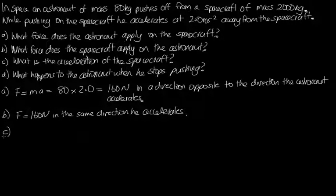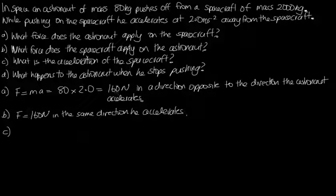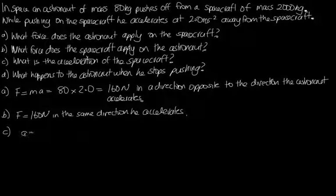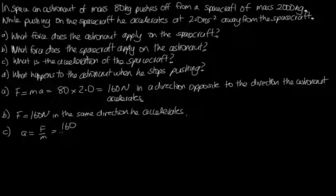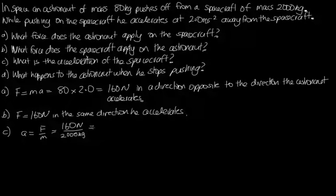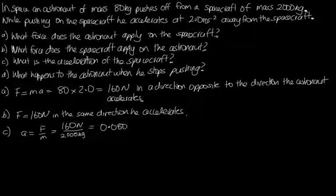Part C: what is the acceleration of the spacecraft? We know the force acting on the spacecraft is 160 newtons. Using Newton's second law, acceleration equals force divided by mass: 160 newtons over 2000 kilograms gives 0.080 meters per second per second, in the opposite direction to the astronaut.